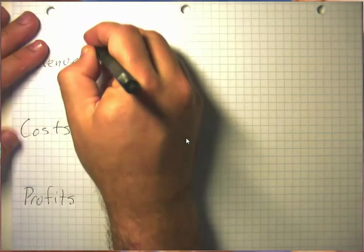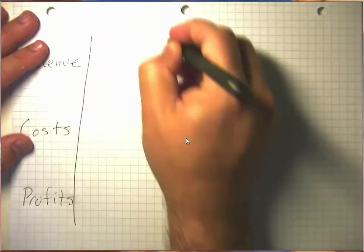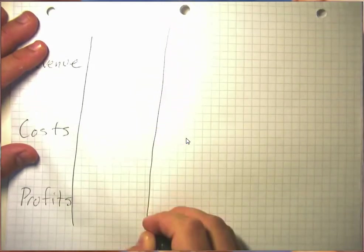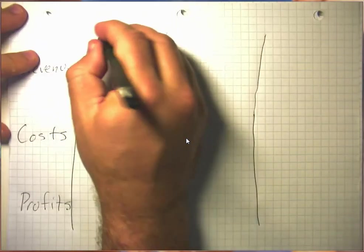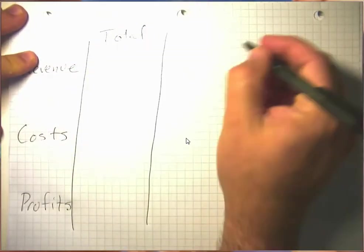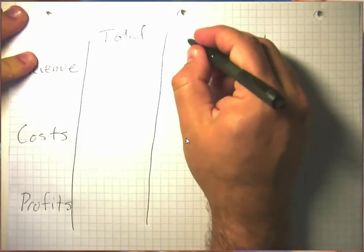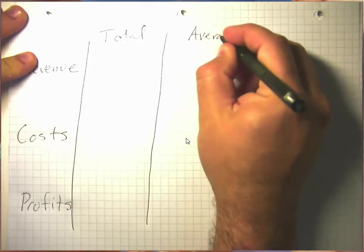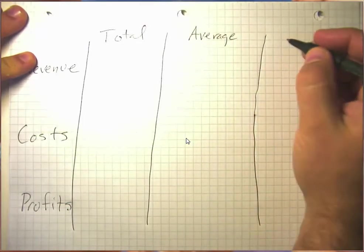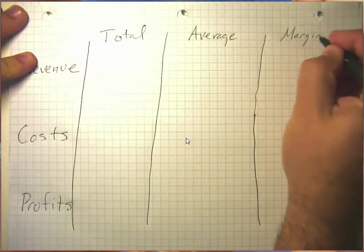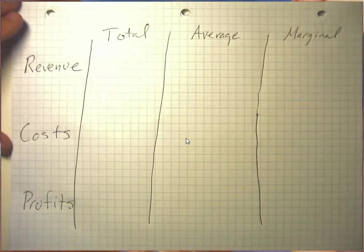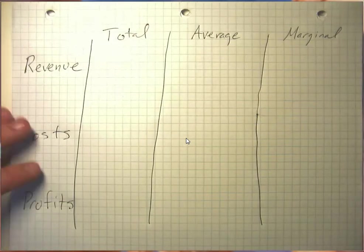And for each one of these, we want to be able to think about total revenue, total costs, and total profits; average revenue, average costs, and average profits; and marginal revenue, marginal costs, and marginal profits.